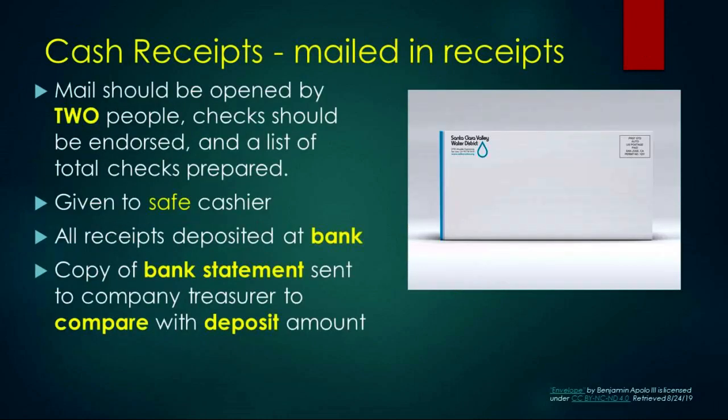Most companies are not having customers pay at a cash register. Cash receipts are usually money mailed in by the customer. Mail should be opened by two people, checks should be endorsed, and a list of total checks prepared. They should be given to the cashier, all receipts should be deposited at the bank, and a copy of the bank statement should be sent to the company treasurer to compare with the deposit amount. The bank prepares a monthly bank statement showing all checks cashed and deposits made, and the treasurer should compare those deposits with the checks received for the day.